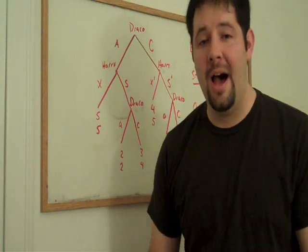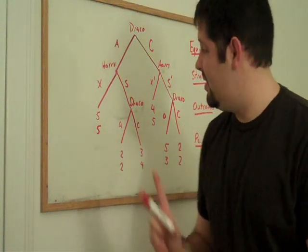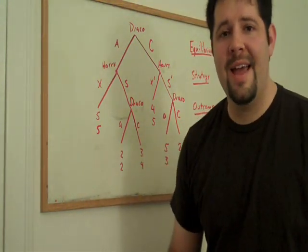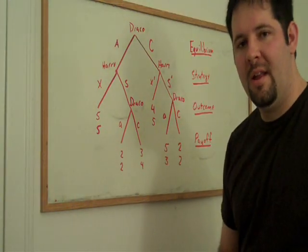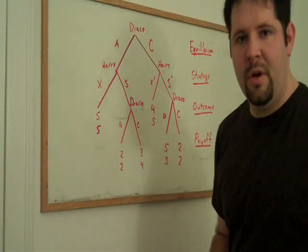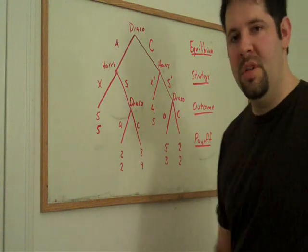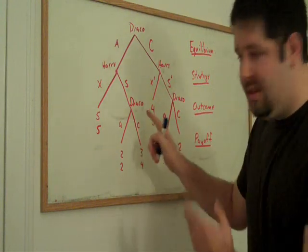So, let's go ahead and apply a backwards induction solution to this game and see how all this works. So, let's start at the lower level of this tree where Draco is faced with two distinct choices.